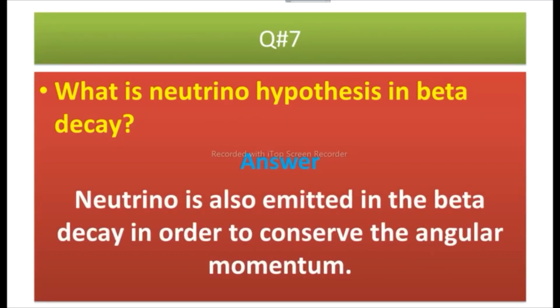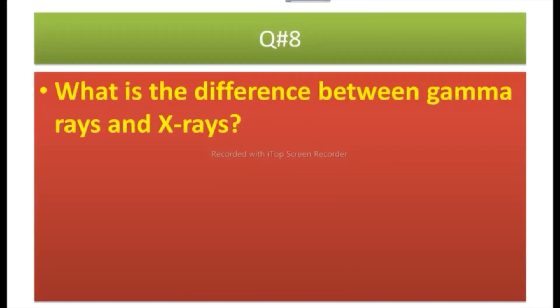Answer: A neutrino is also emitted in beta decay in order to conserve the angular momentum.